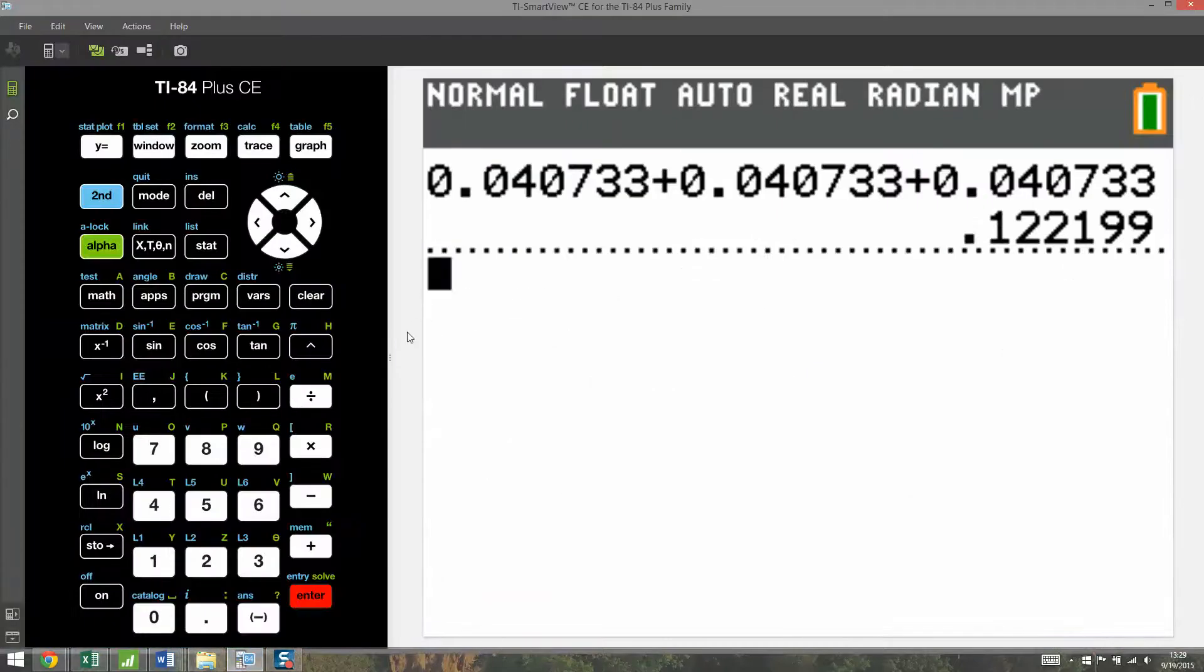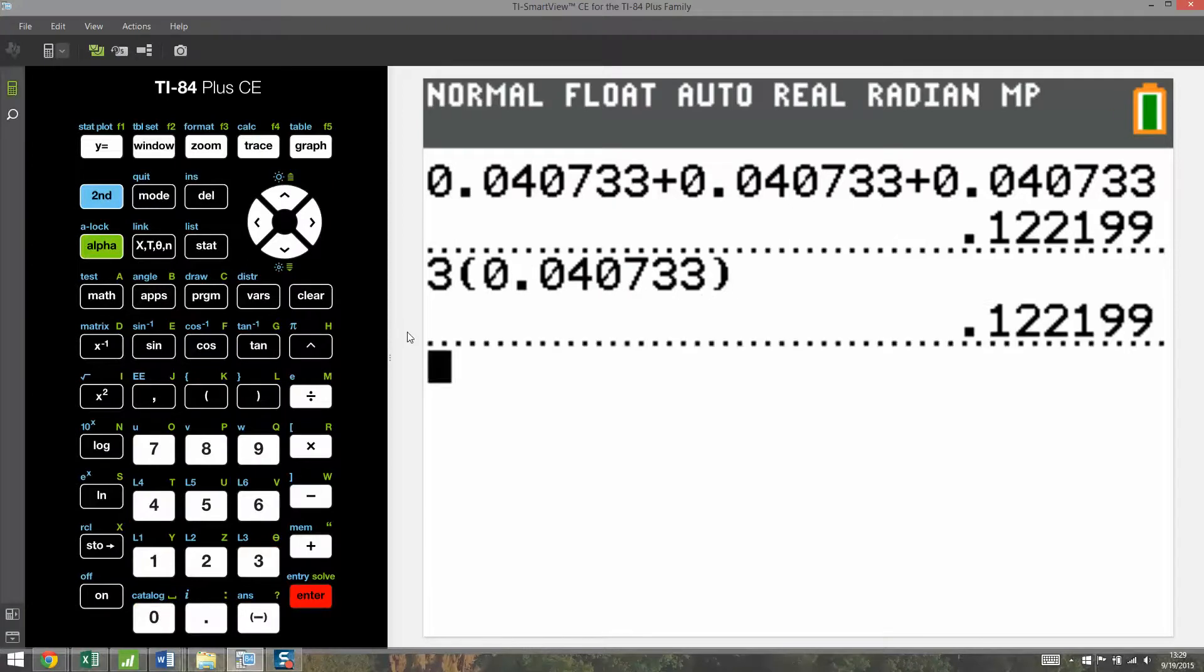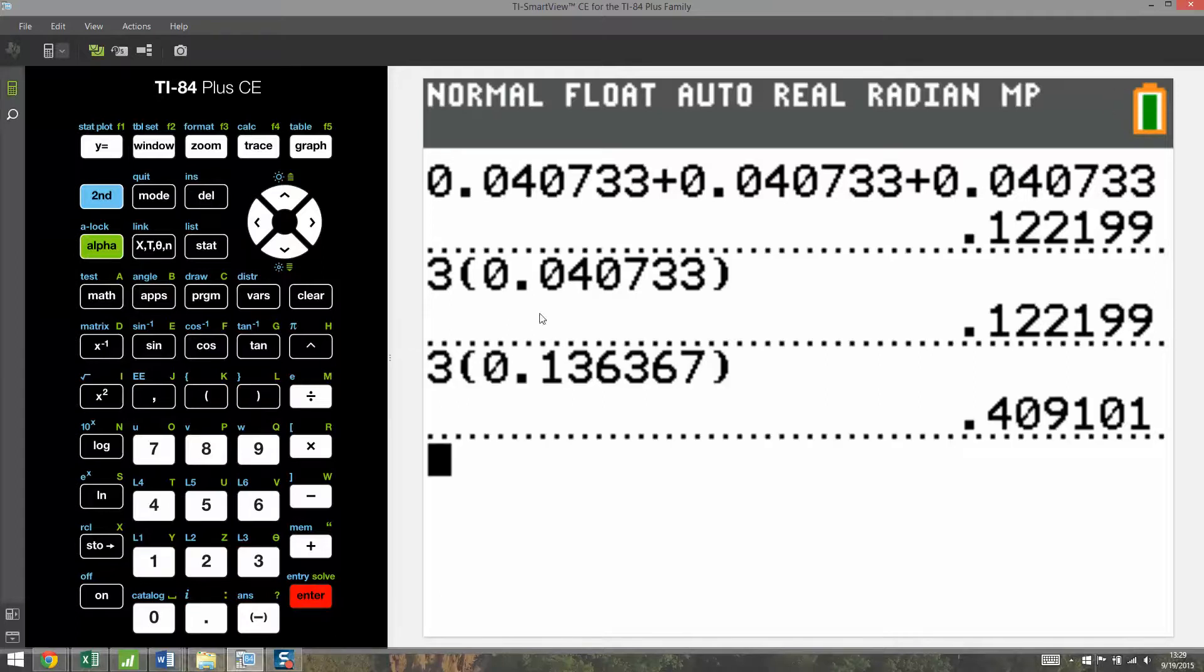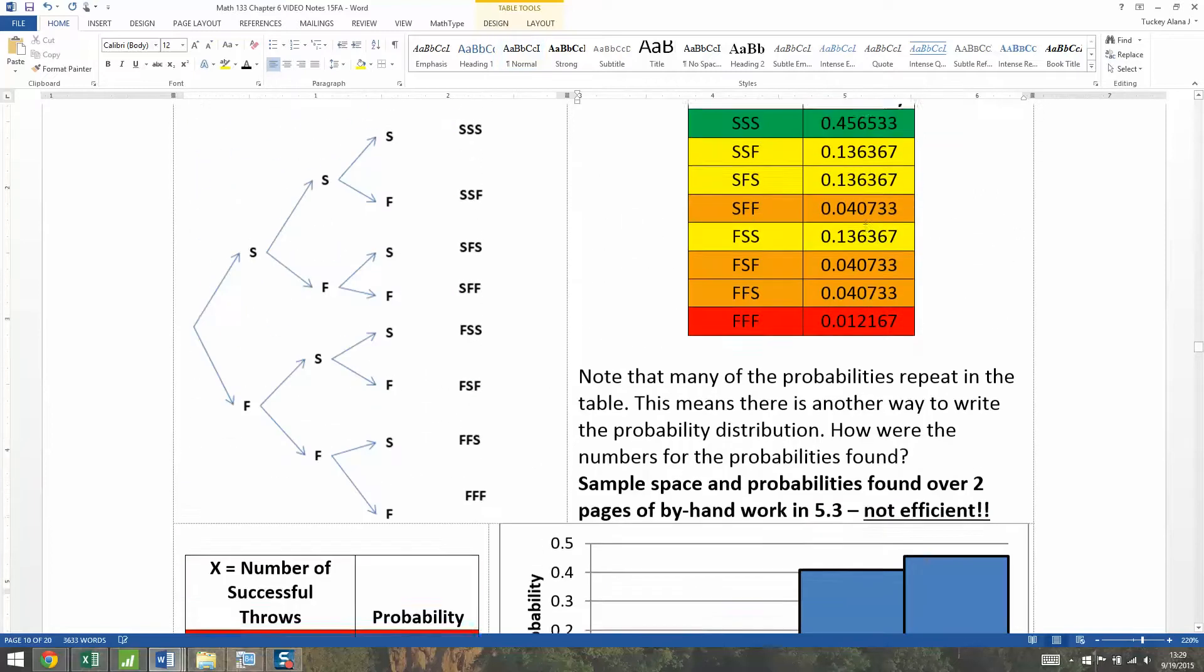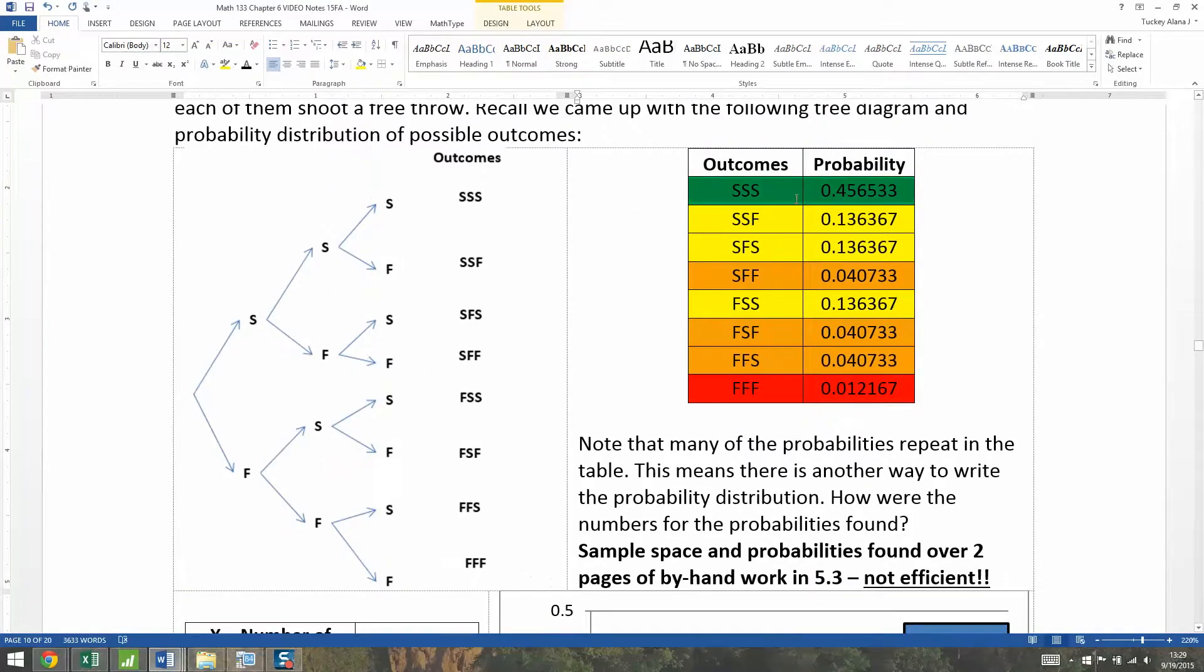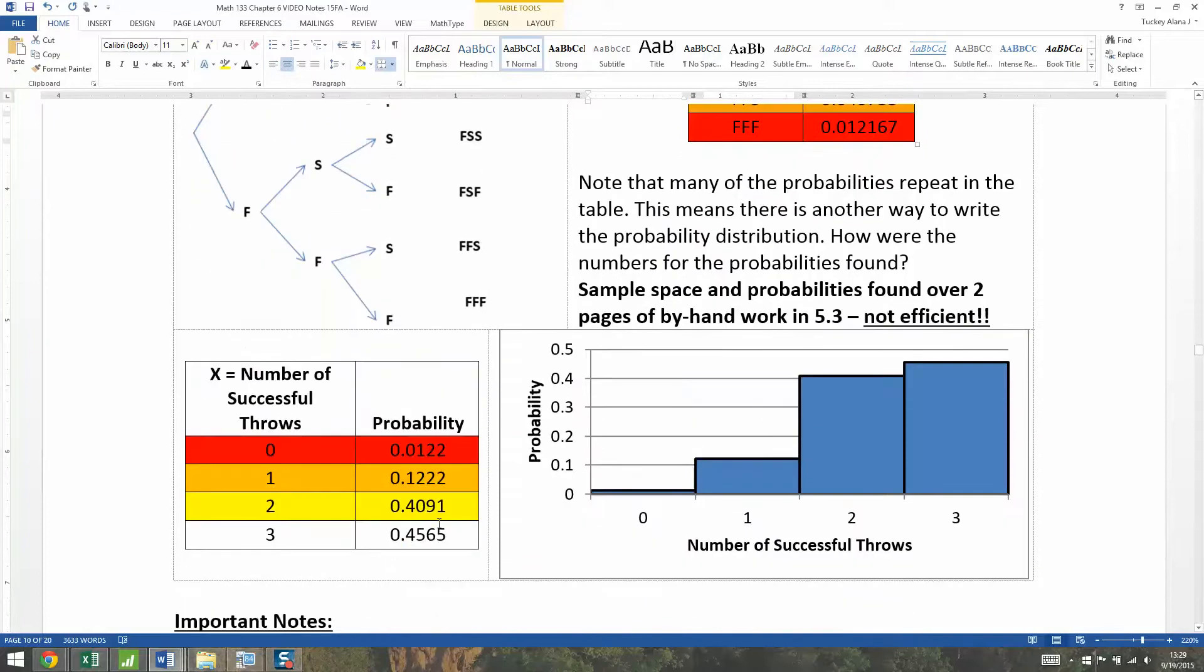And I can find that. You could just add them, but when you add something times itself three times, that's the same thing as multiplying it by three. So I want three times 0.136367, and it should be 0.4091. Now, what about three? Well, three, there's no rounding there. So that's 0.4565. So indeed, that's just fine.